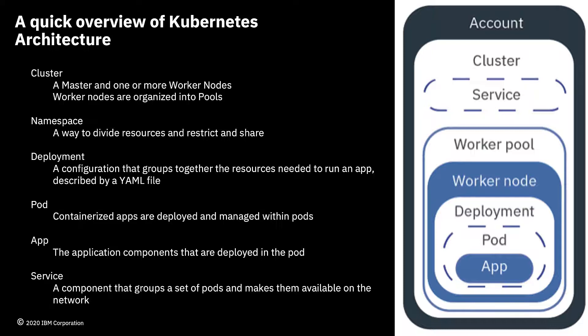If one pod isn't enough to service all of the users, then you can use auto scalers, for example, to create more pods to address the load. Lastly we have the service component. A service is a Kubernetes resource that groups a set of pods and gives them network connectivity without exposing the actual private IP address of the pod itself. The service allows you to make your app available within the cluster or on the public internet — so it's quite an important component.